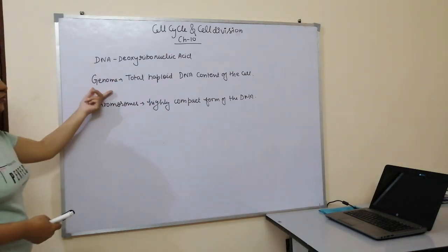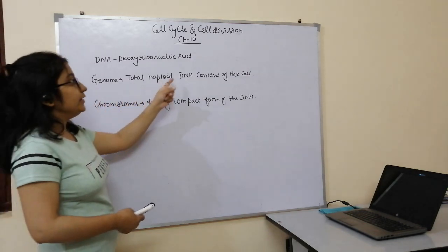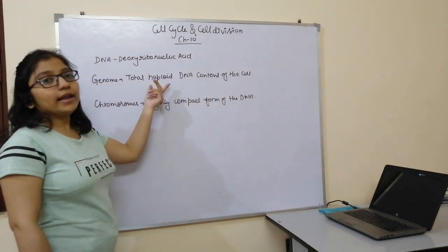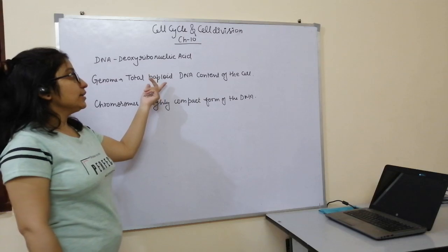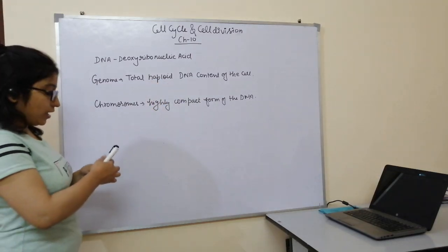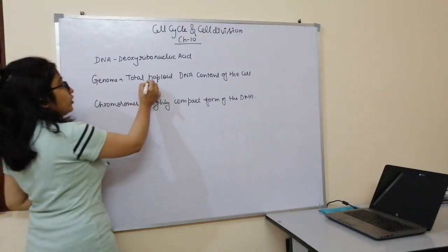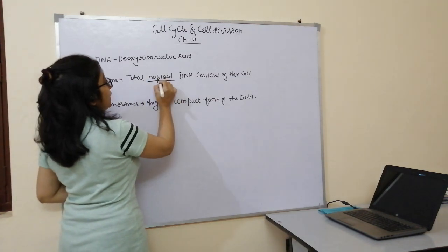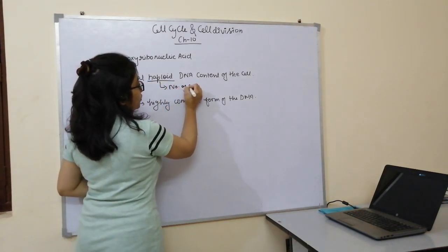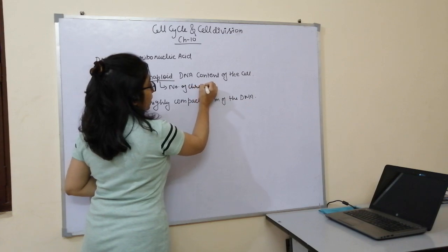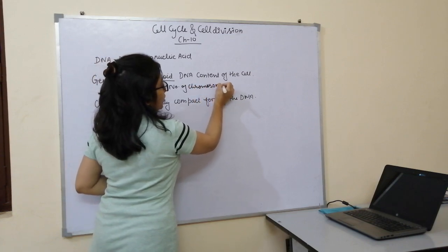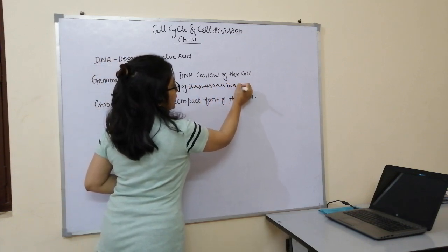The genome is the total haploid DNA content of the cell. Haploid refers to the number of chromosomes that are present in the germ cell — it has only one set of each chromosome.